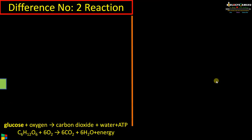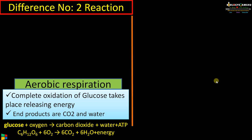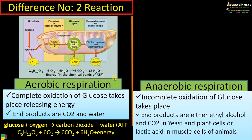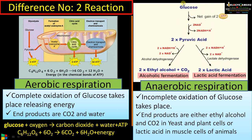Difference number two regarding the reaction: in aerobic respiration, complete oxidation of glucose takes place, releasing energy. Glucose is completely oxidized to form carbon dioxide and water, with the release of energy. The end products are carbon dioxide and water. Whereas in anaerobic respiration, incomplete oxidation of glucose takes place through glycolysis, converting glucose to two pyruvic acid molecules.